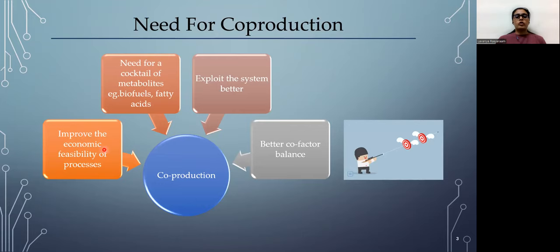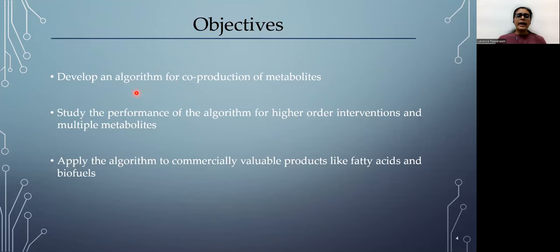So to summarize, co-production can improve the economic feasibility of a process. It is especially helpful in cases like biofuels and fatty acids where you would like to co-optimize a cocktail of metabolites rather than a single metabolite. And it is also useful in cases where you would like to exploit the system better, and it ensures better cofactor balance in certain cases.